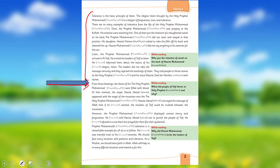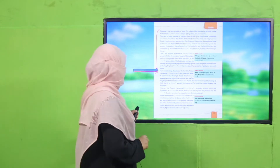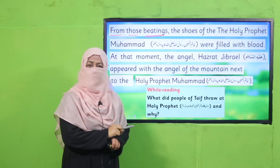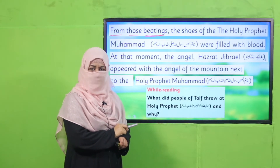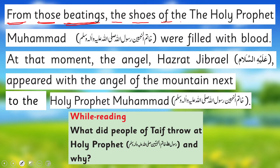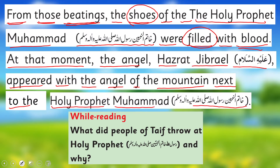So let's start reading. These two paragraphs we have read yesterday, so from the third paragraph, the very first line, I'm going to read — listen carefully. Our beloved Prophet Muhammad sallallahu alaihi wa sallam, along with his slave, went to Taif, and the people started throwing stones at him. From those beatings, the shoes of the Holy Prophet Muhammad Rasulullah sallallahu alaihi wa sallam were filled with blood. He was so badly injured. At that moment, the angel Hazrat Jibreel a.s. appeared with the angel of the mountains.